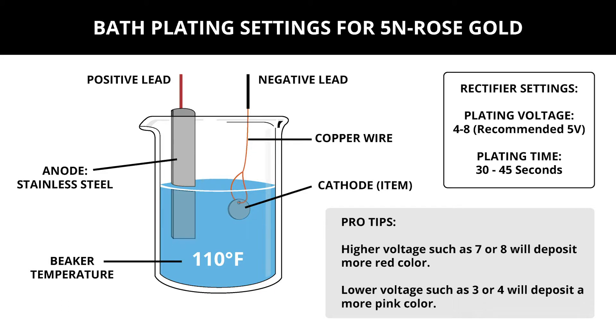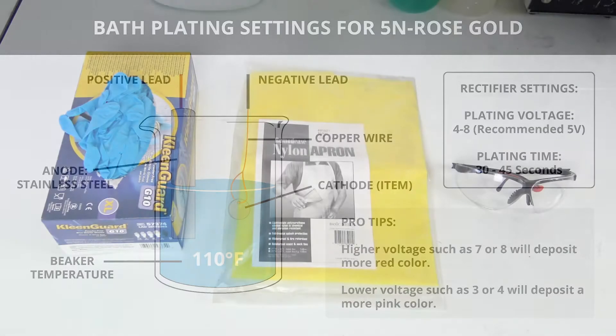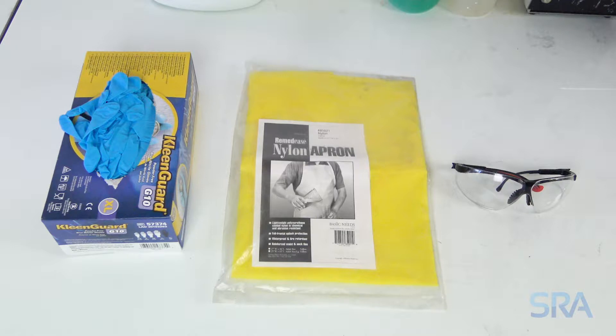Use a stainless steel anode. For the plating rectifier we recommend 5 volts with a 30 to 45 second plate time. With everything set, we're ready to get started. For safety, we recommend wearing gloves, an apron, and protective eyeglasses. Also ensure your work area is properly ventilated.